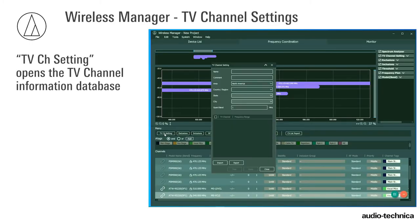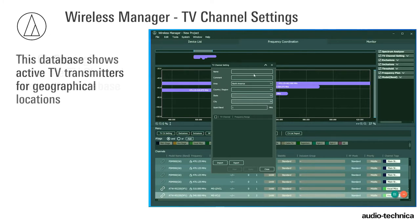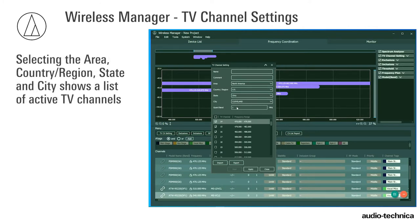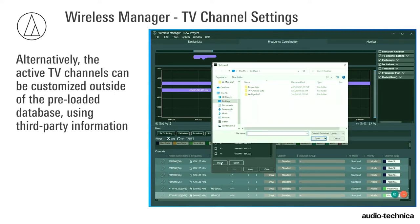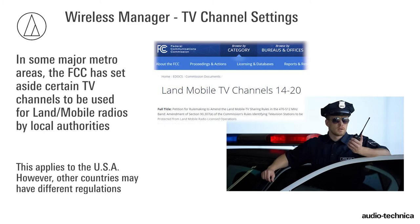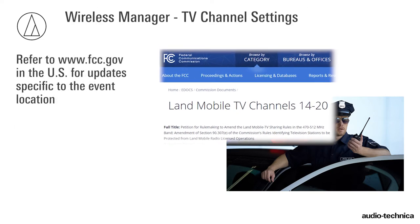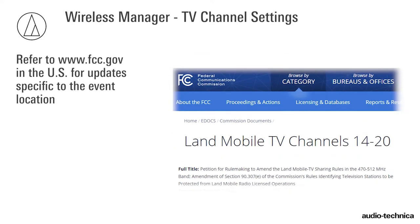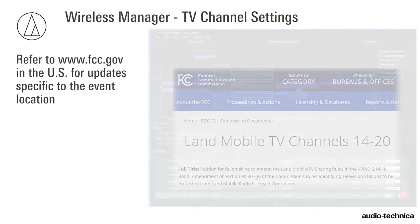TV Channel Settings opens the TV Channel Information Database. This database shows active TV transmitters for geographical locations. Selecting the area, country, state, and city shows a list of active TV channels. Alternatively, the active TV channels can be customized outside the preloaded database using third-party information. In some major metro areas, the FCC has set aside certain TV channels to be used for land mobile radios by local authorities. Refer to www.fcc.gov for updates specific to the event location.